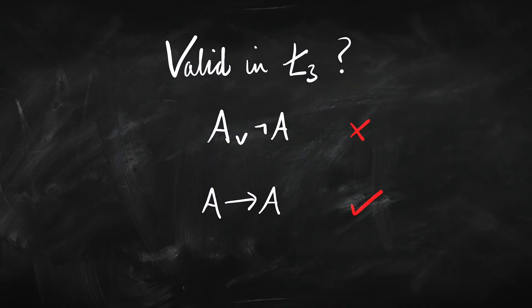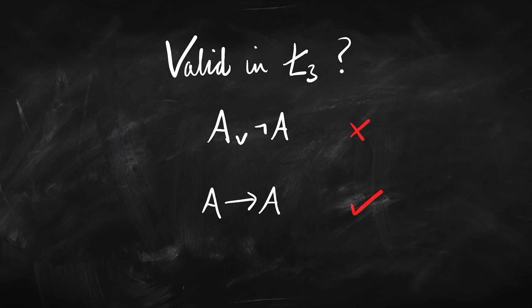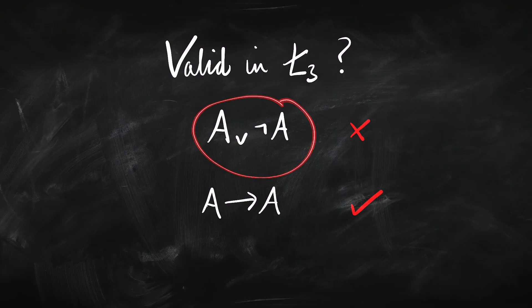But A∨¬A, the law of excluded middle, is not going to be valid — because again, if A is 'other,' then ¬A is 'other,' so the whole thing will be 'other.' The reason these sentences don't come out valid is because we have this 'other' value. Excluded middle is designed to rule out a third value; since we've got this third value floating around and since we count sentences as valid only when they're always true, excluded middle won't be valid in either Strong Kleene or Łukasiewicz logic.